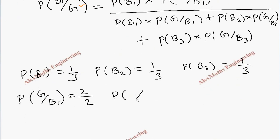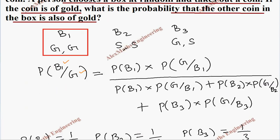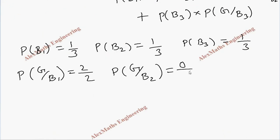Now, P of from bag 2 getting gold. Both are silver here. So, it is 0 out of the two coins. 0 by 2.